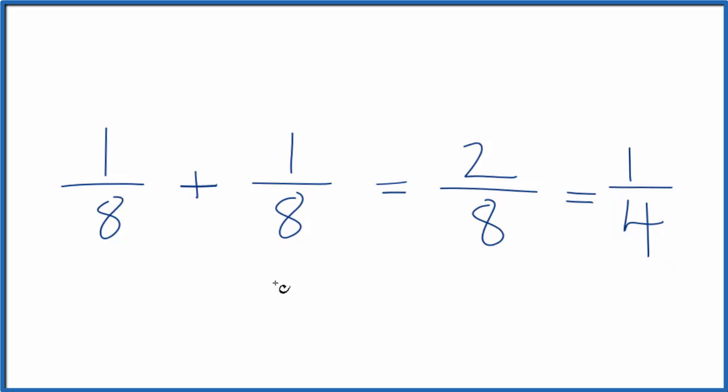If you wanted to think about this in terms of decimals, one-eighth is 0.125. 0.125 plus 0.125 gives us 0.25. One-fourth is equal to 0.25. Two divided by eight is also equal to 0.25. So we've correctly added one-eighth plus one-eighth.